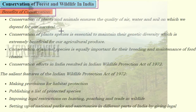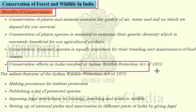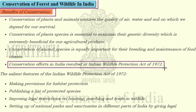Conservation of plants and animals ensures the quality of air, water, and soil on which we depend for survival. Conservation of plant species is essential to maintain genetic diversity, which is extremely beneficial for agricultural produce. Conservation of animal species is equally important for breeding and maintaining food chains. Conservation efforts in India resulted in the Indian Wildlife Protection Act of 1972.